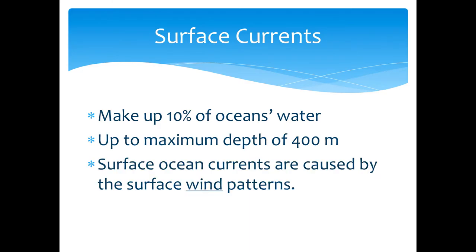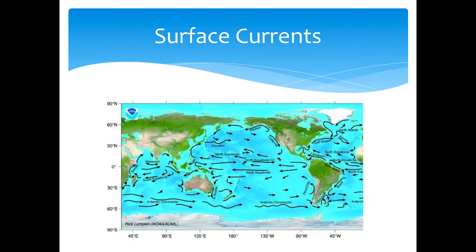Surface currents are at the top of the water — they move quickly and the water is warm. Versus the bottom of the ocean, which has cold, slow-moving currents.